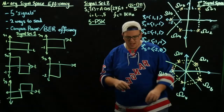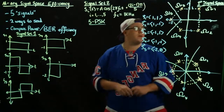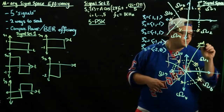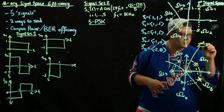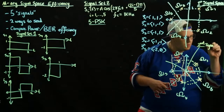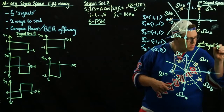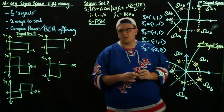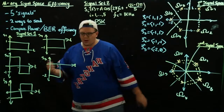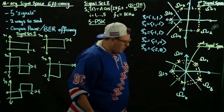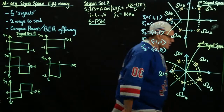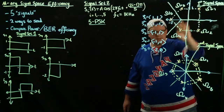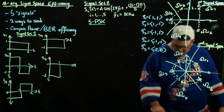So now we have two signal spaces. This is the second signal space. Now that we have this, we want to go about talking about their performance. This one is very, very well defined, so we can talk directly about its performance.